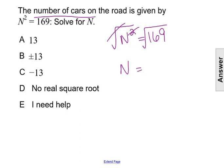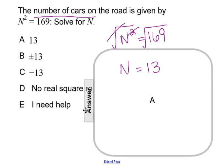So we want to take the positive or principal square root, just the square root of 169, to get our answer of 13. So N equals 13 is our answer. There are 13 cars on the road, making our answer choice A.